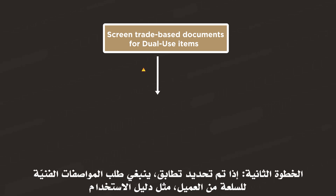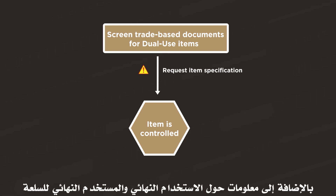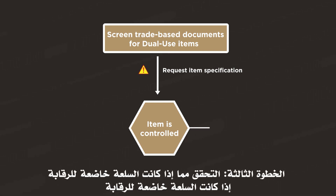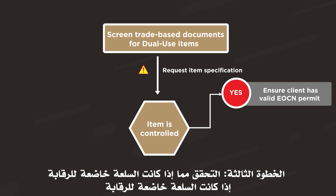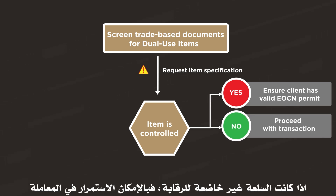Step 2: If an alert is identified, you should request the client for technical specifications of the item, such as a catalog or manual, as well as information on the end-use and end-user of the item. Step 3: Verify whether the item is controlled under the UAE Control List. If the item is controlled, you need to ensure that the client has a valid permit issued by the Executive Office before processing the transaction. If the item is not controlled, you may proceed with the transaction.